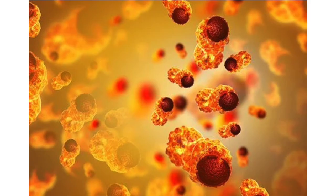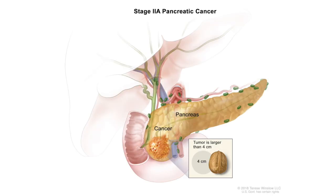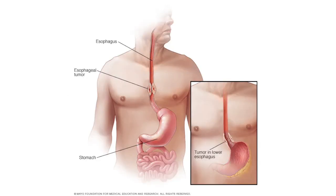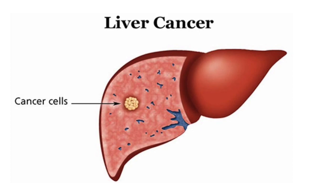Just like the other organ systems, people can have cancer that affects organs and tissues in the GI tract, which is why they are called GI cancers. The most common GI cancers are pancreatic cancer, esophageal cancer, liver cancer, and colon cancer.